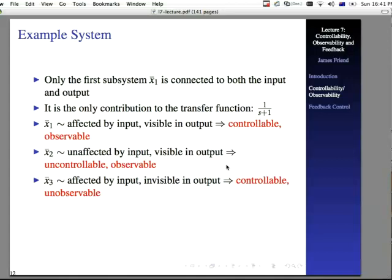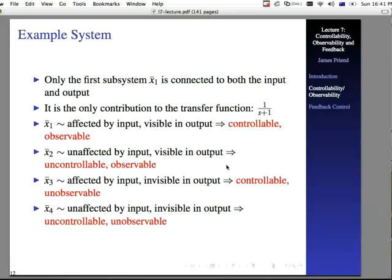x3 bar, it's affected by the input, and invisible in the output. We can control it, but what's happening with it, we don't know. x4 bar, it's not affected by input, and it's invisible input, output. So, not only can we not control it, we don't even have any idea what's going on in it, because we can't see what's happening.